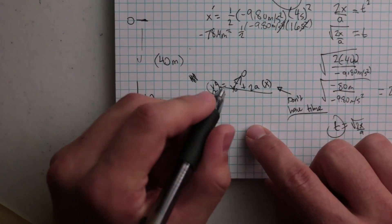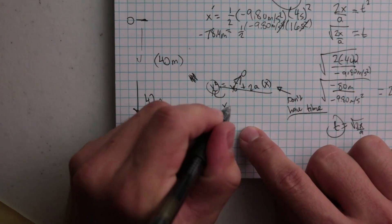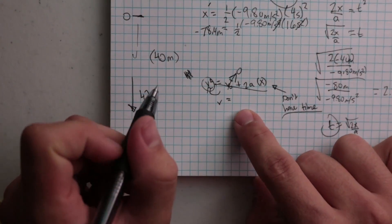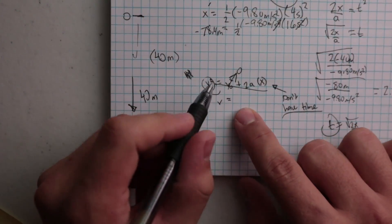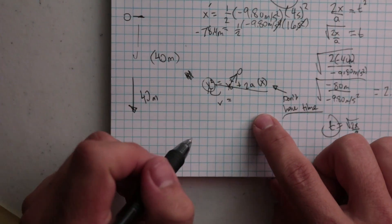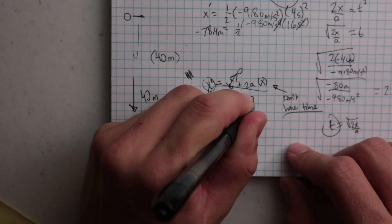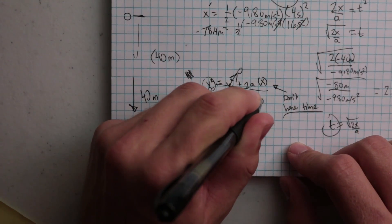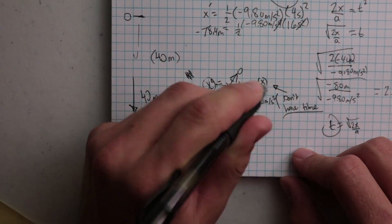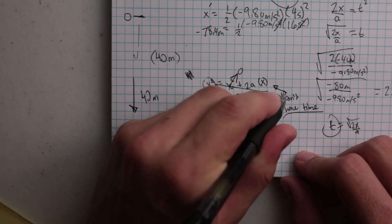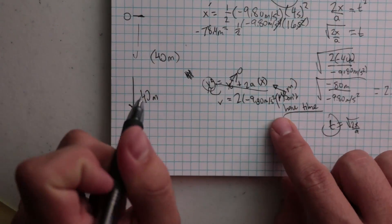Well, v naught's going to go to zero. And we want to solve the variables first, and then we want to solve the equation first, and then we'll plug in numbers. So we start with 2, negative 9.80 meters per second squared, and then we're going to multiply that by 40 meters. Kind of messy, I know. I'll clean it up.